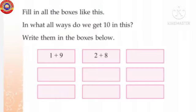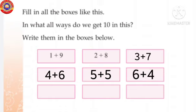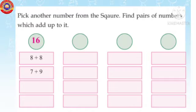Okay children, next one: in what ways do we get 10? Write them in the boxes below. Look at the number grid then write here: 1 plus 9, 2 plus 8, 3 plus 7, 4 plus 6, 5 plus 5, 6 plus 4, 7 plus 3, 8 plus 2, 9 plus 1.